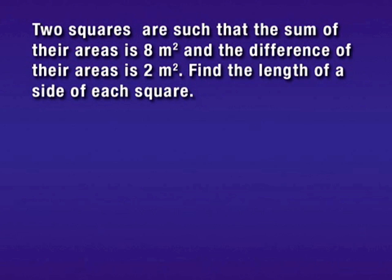Two squares are such that the sum of their areas is 8 square meters, and the difference of their areas is 2 square meters. Find the length of a side of each square.